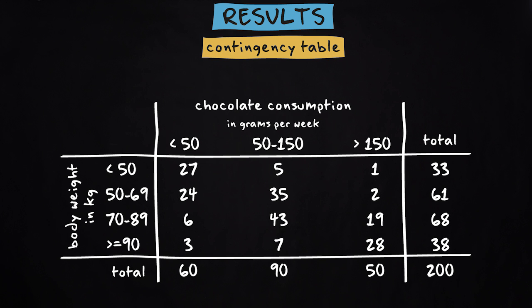Here are the results. What you see here is a contingency table. A contingency table enables you to display the relationship between two ordinal or nominal variables. It is similar to a frequency table, but the major difference is that a frequency table always concerns only one variable, whereas a contingency table concerns two variables.